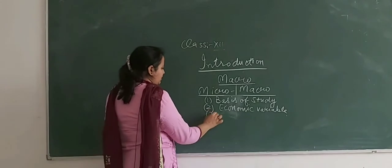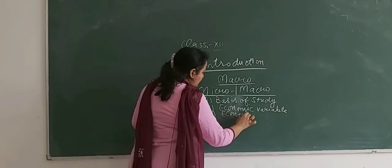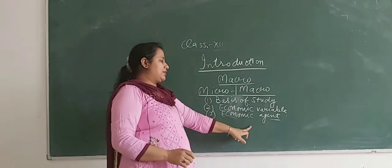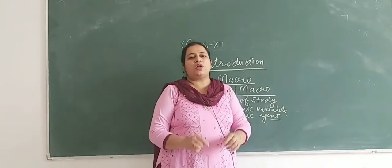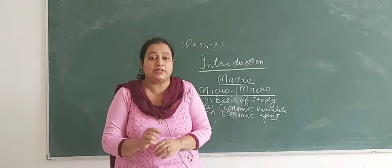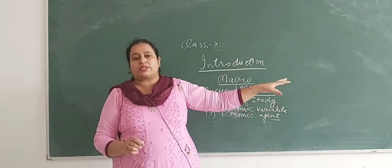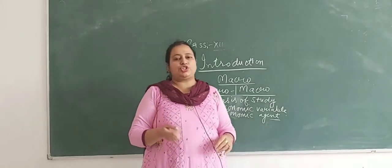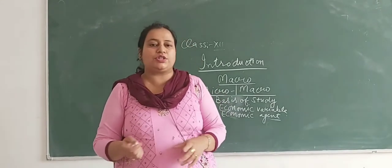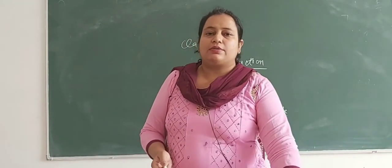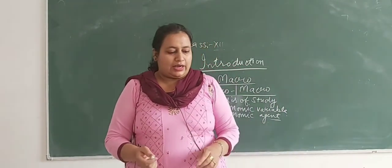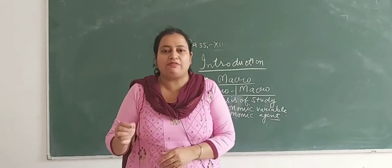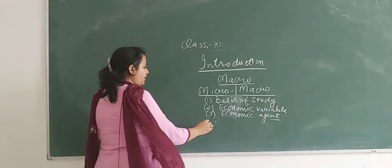Third is economic agents. In microeconomics, when we discuss individual agents, they focus only on their own gains. In macroeconomics, the agents are institutions such as SEBI — Securities Exchange Board of India — RBI — Reserve Bank of India — and TRAI — Telecom Regulatory Authority of India — which focus on more and more social welfare.